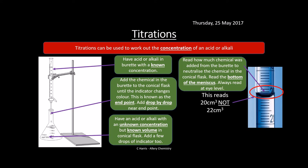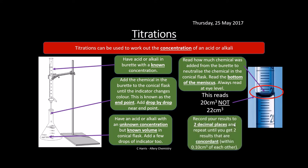Record results to two decimal places. Repeat until you obtain two concordant results — that is, two titre values within 0.1 cm³ of each other. For example, a burette reading at the bottom of the meniscus of 19.8 cm³ would be recorded as 19.8, not 20 or 22.